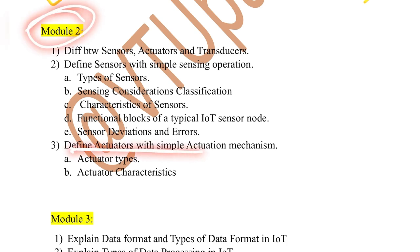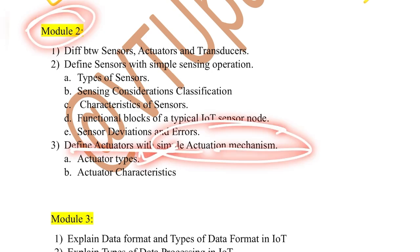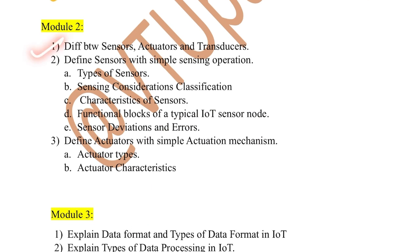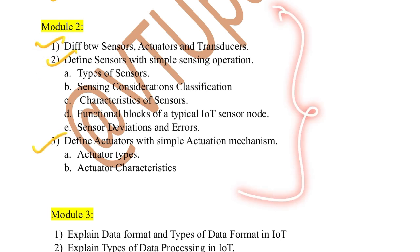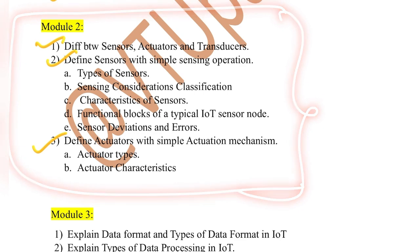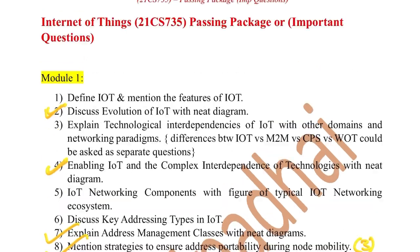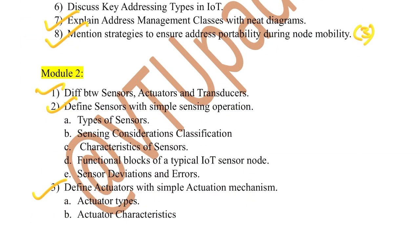The third topic in this module is actuators and simple actuation mechanism — very easy. Then types of actuators: there are seven types. Then actuator characteristics: there are four characteristics. If you cover the first, second, and third questions of the second module, you will be all done with this module and can easily score 20 marks here as well. Don't miss out the first and second modules because you can easily score 20 marks each.